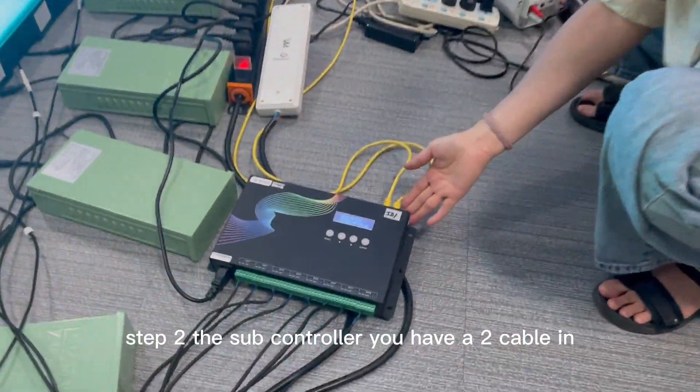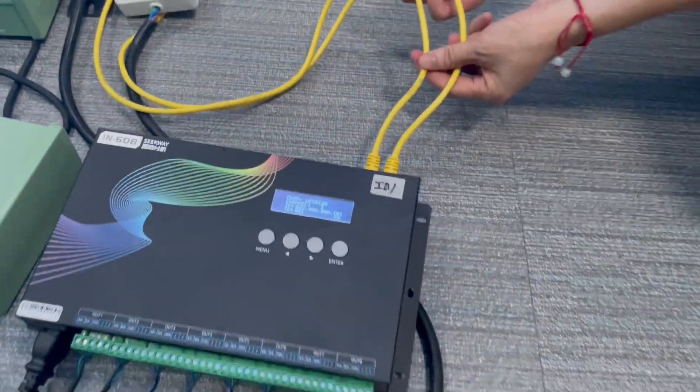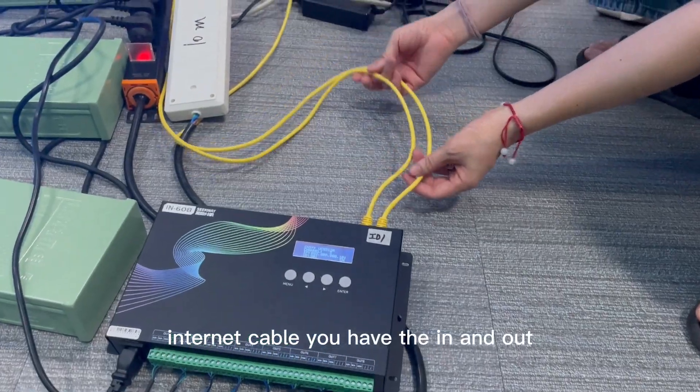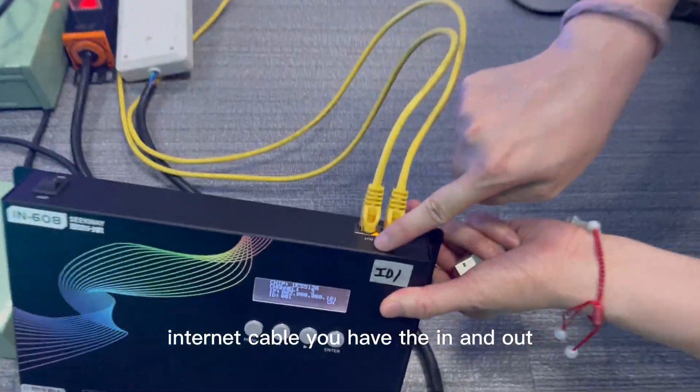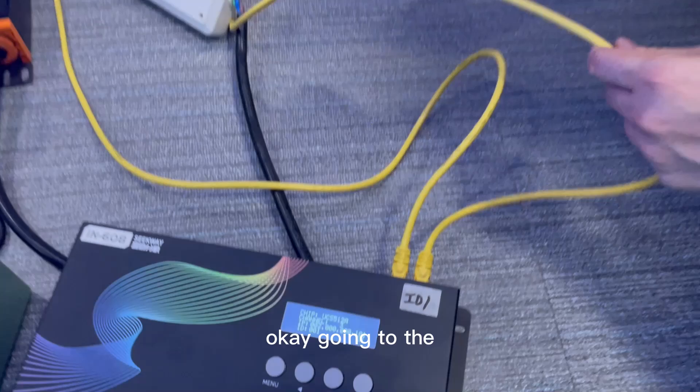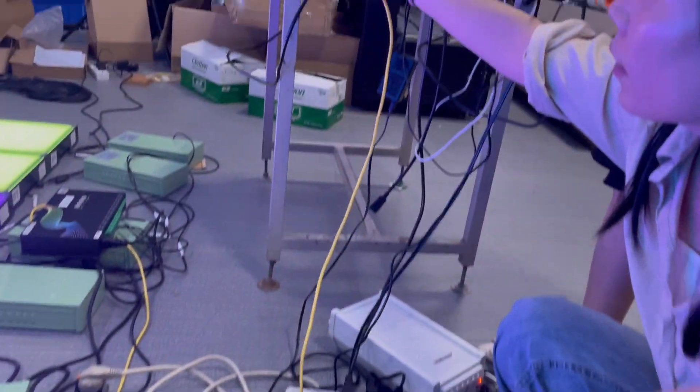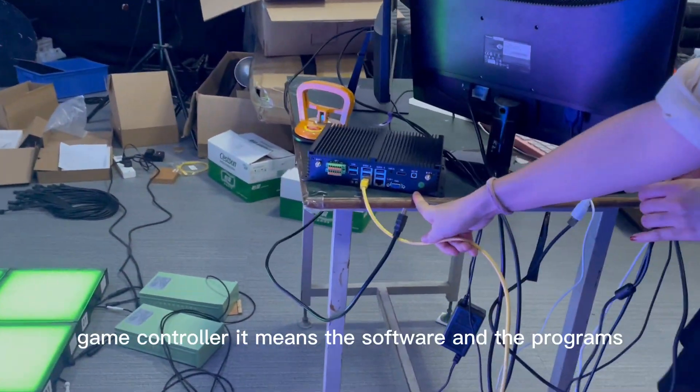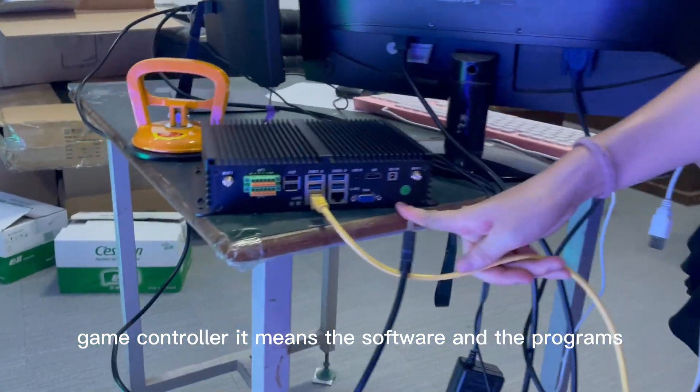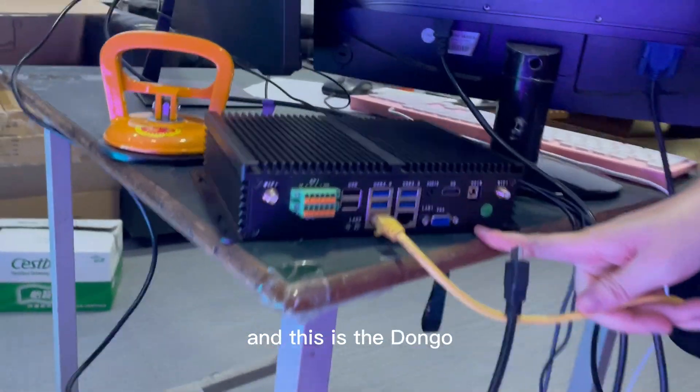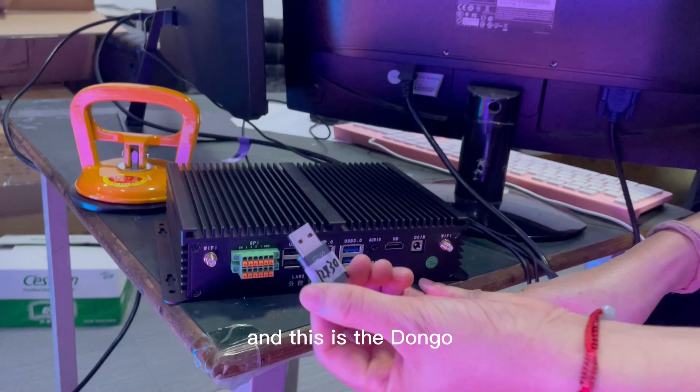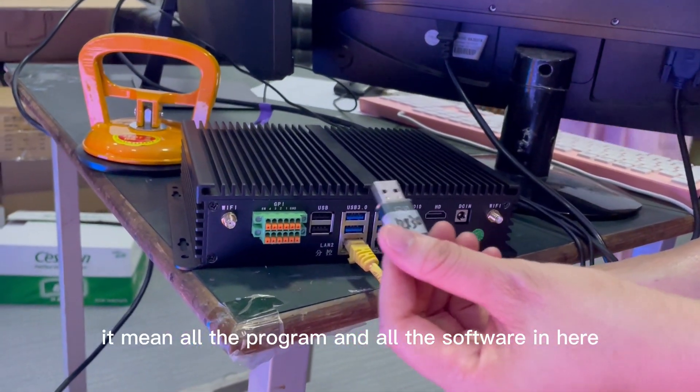To the subcontroller you have two cables, an internet cable, you have the in and out going to the game controller with the software and programs. And this is the dongle. Dongle means all the programs.